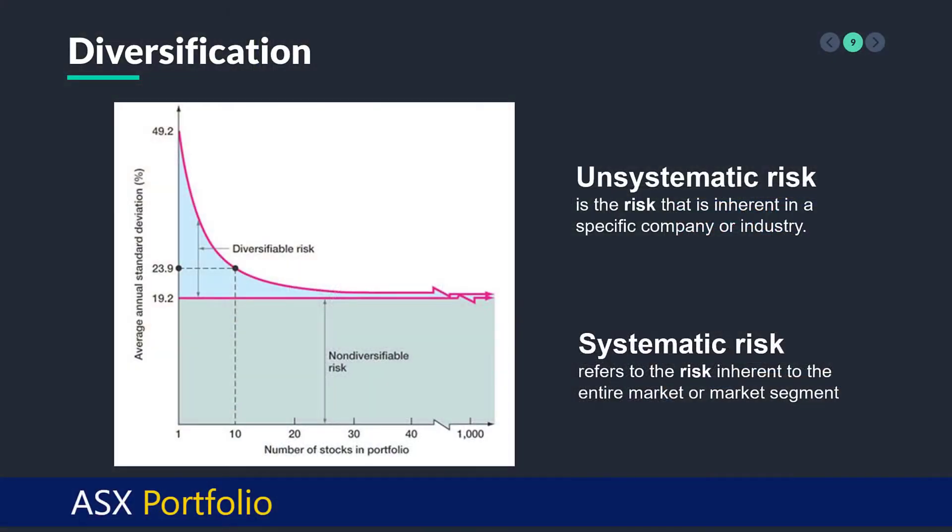There's another type of risk which is diversifiable, called unsystematic risk. This is the risk inherent to a specific company or industry. One of the sectors hit hardest during the epidemic with the virus was the airline industry. Some industries and companies can vary quite substantially from what the market is doing. This is unsystematic risk and it can be diversified.